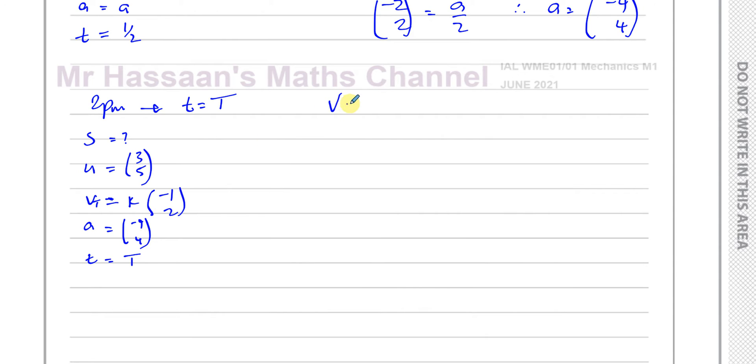So I can use again v equals u plus at. In this case, v is k times minus 1, 2. U is 3, 5. Acceleration is minus 4, 4, and t is capital T. So we can form two equations. I'm going to use the i component, the top component of these vectors. So minus k equals 3 minus 4T. And for the j components, 2k equals 5 plus 4T.